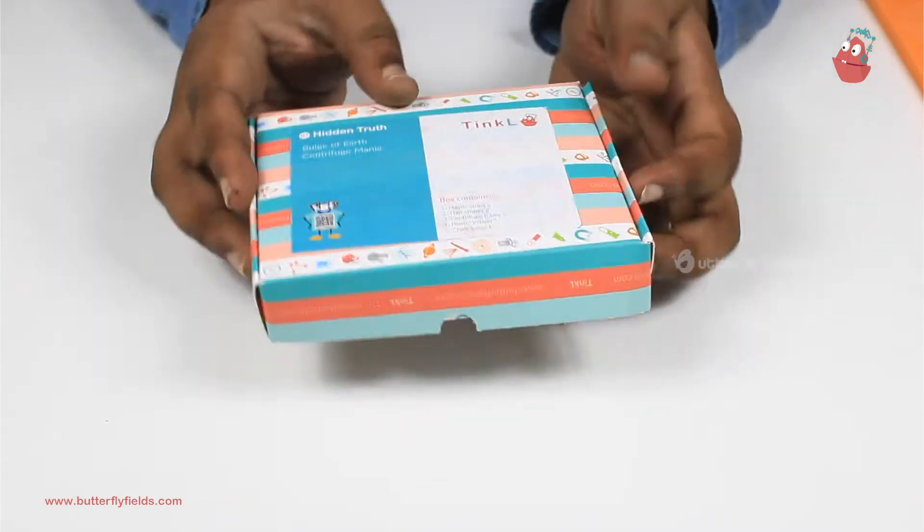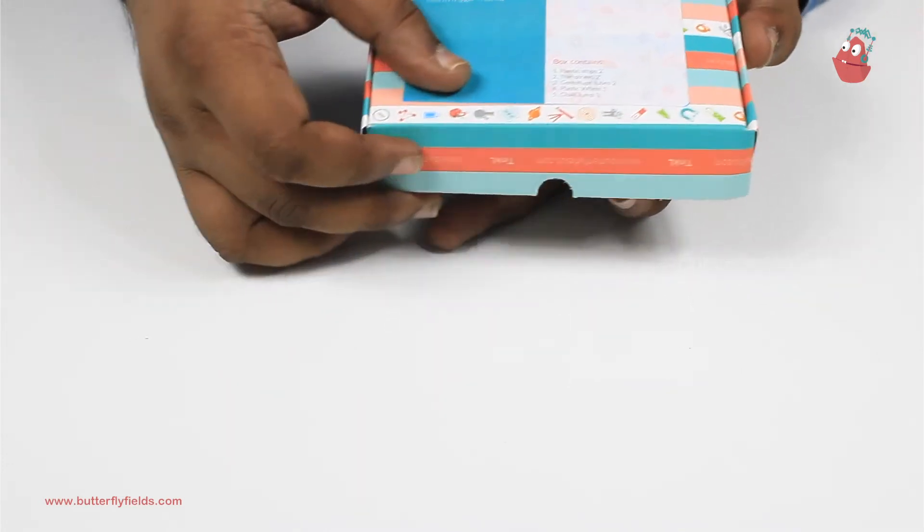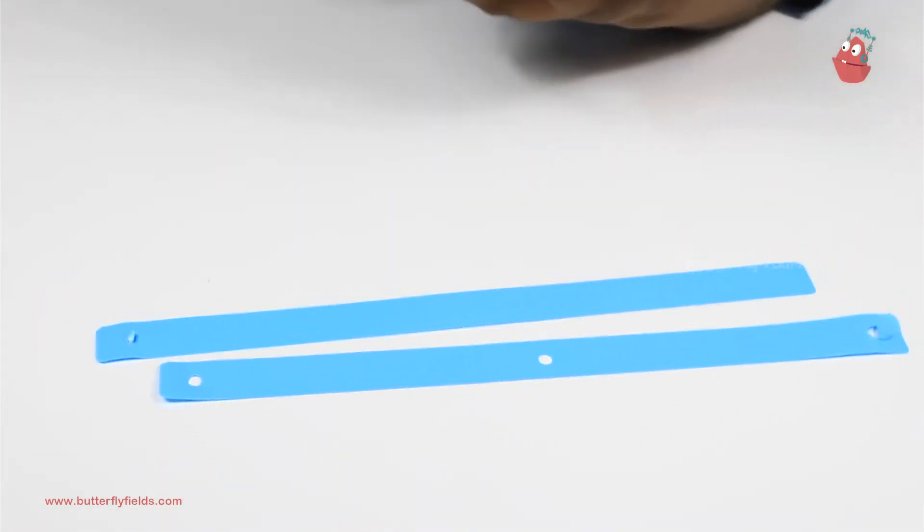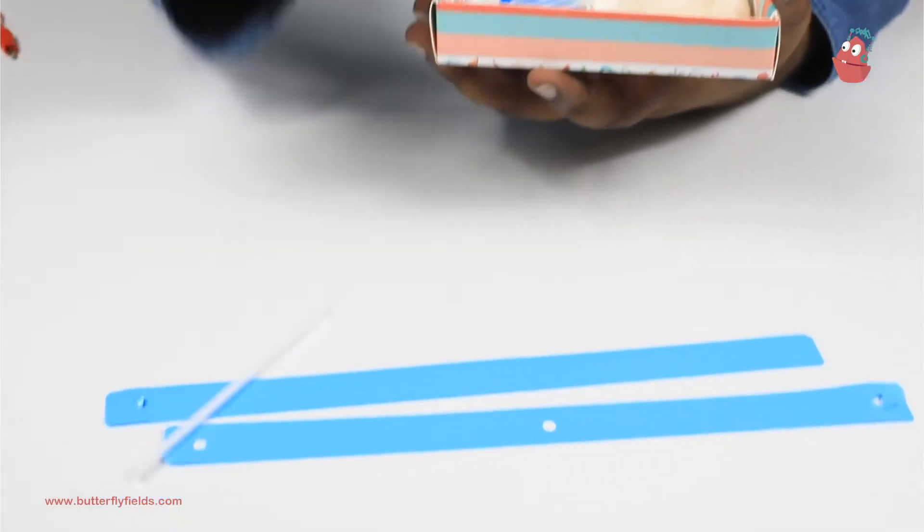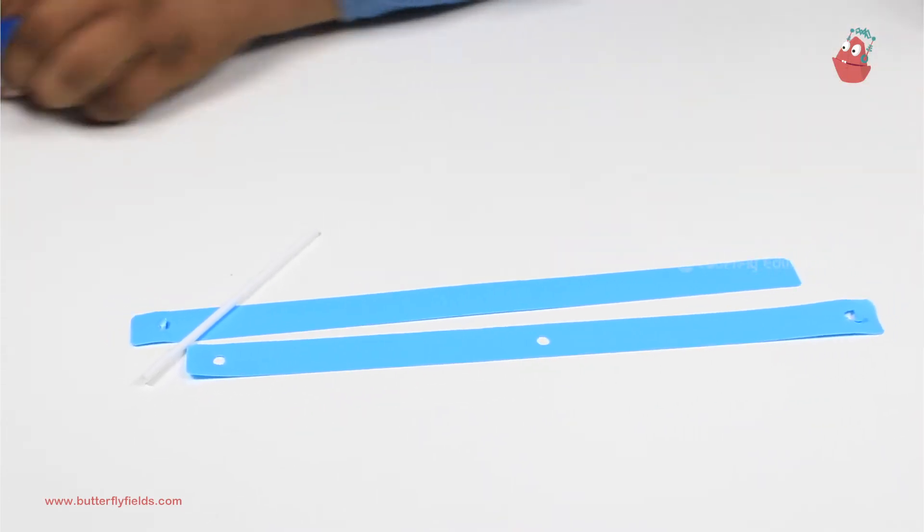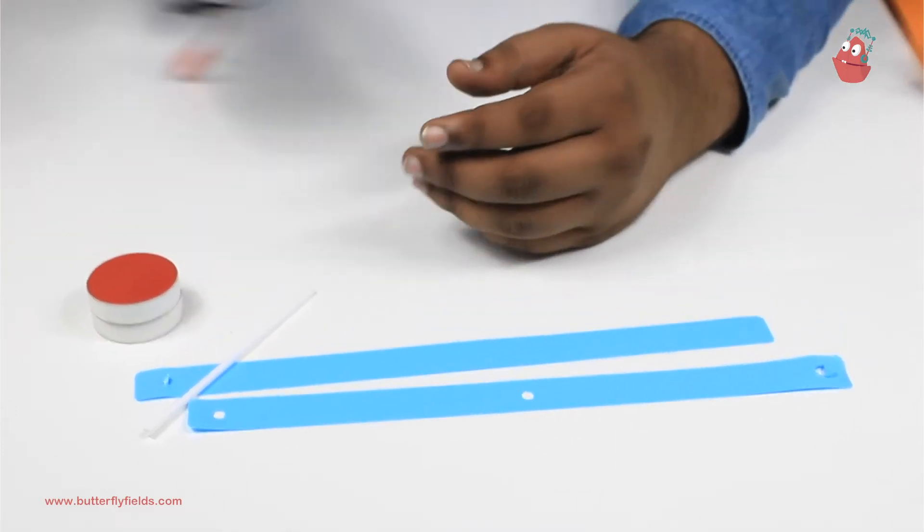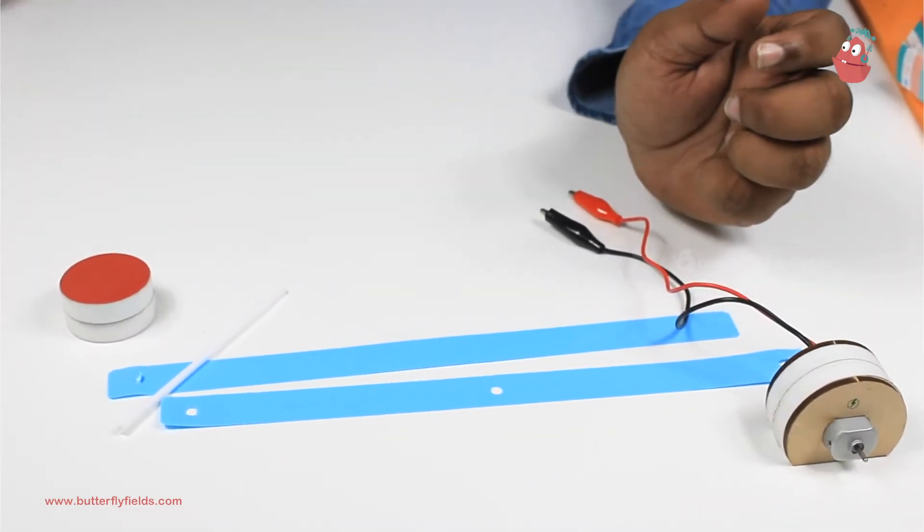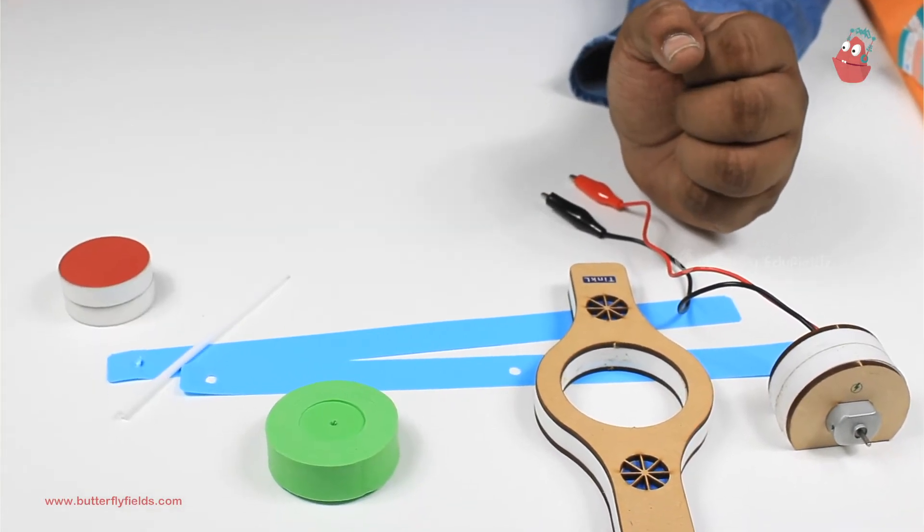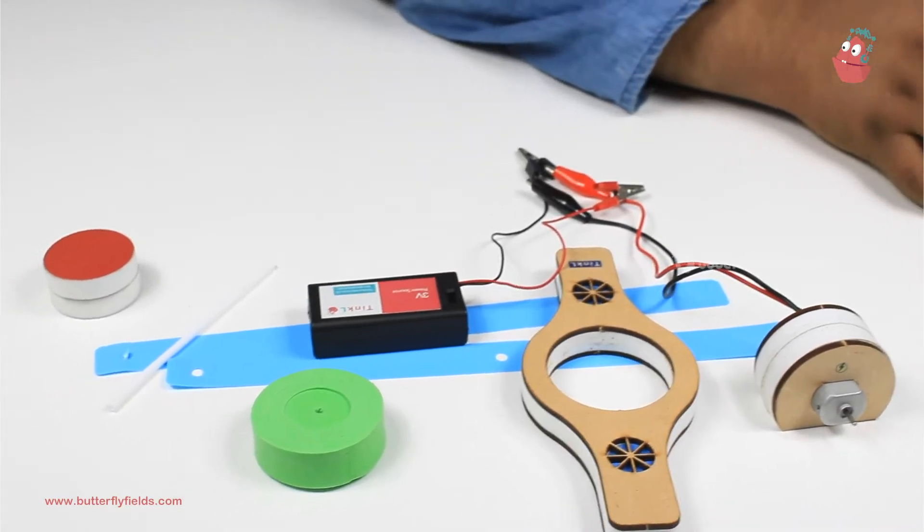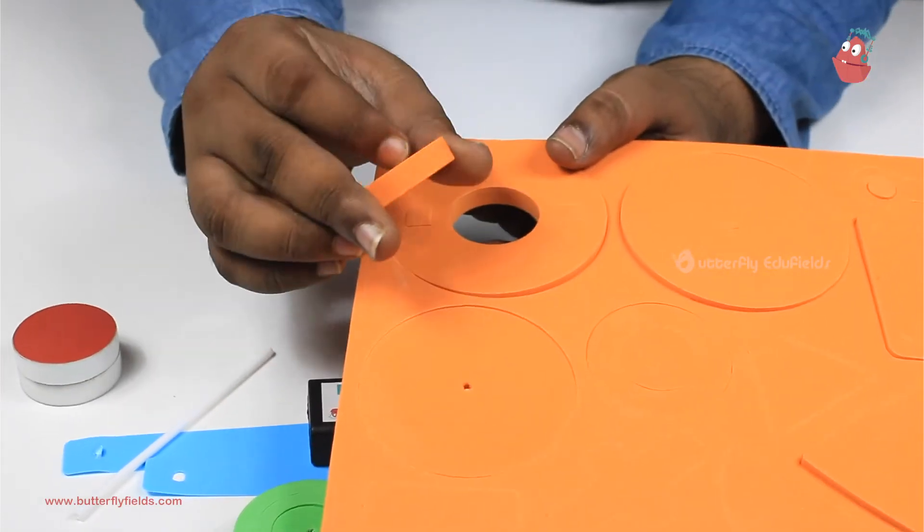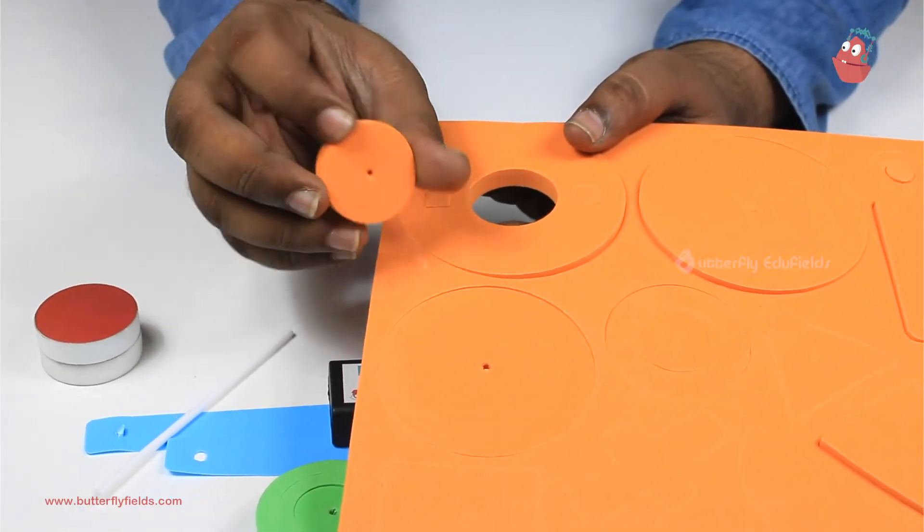For that, from box number four you will require these materials: the blue strips, the plastic straw, the magnetos, the motor bit, the double pop block, the focus bit, three-volt power source, and from this board we will take this small circle with the hole at the center.